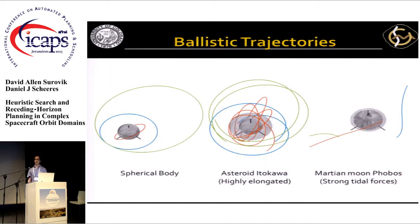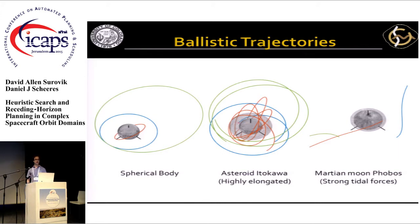To quickly illustrate what I've just been talking about: for a Keplerian system, if you're orbiting a spherical body on a bound orbit, motion roughly follows an ellipse and you just repeat. As soon as you start to distort that central body — as shown in the second image for an approximated shape of Itokawa — motion quickly becomes very non-periodic and chaotic.